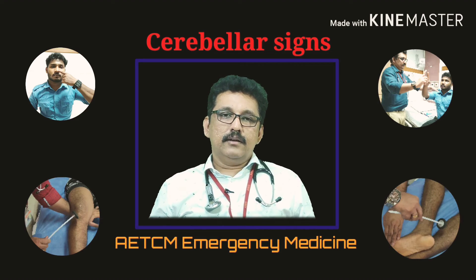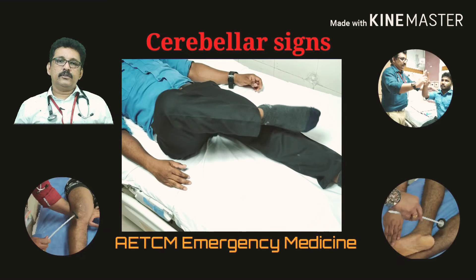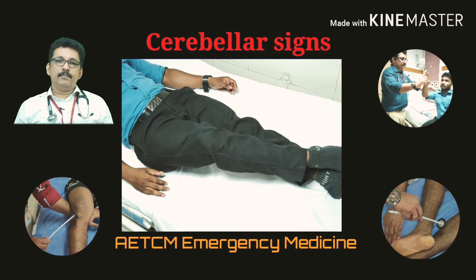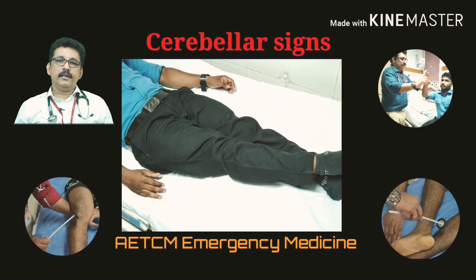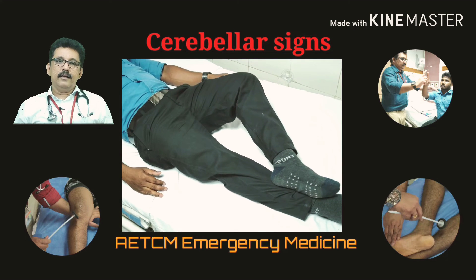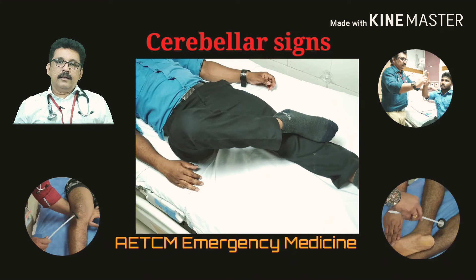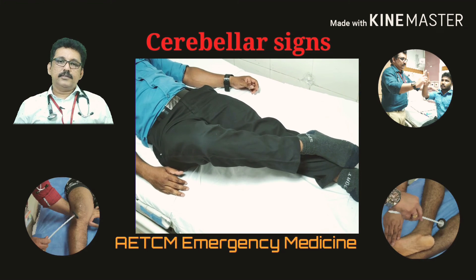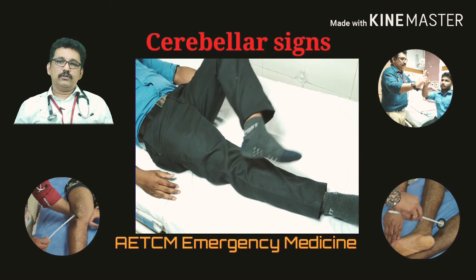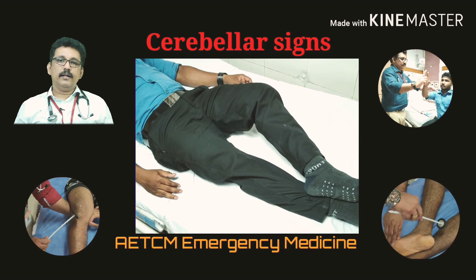The heel-shin test assesses the same function in the lower limbs. With the patient supine, ask them to lift one leg, place the heel on the knee of the opposite leg, and slide it down the shin. A normal patient does this accurately. If there is a right-sided lesion, the patient cannot perform the test with the right leg, and vice versa for a left-sided lesion.